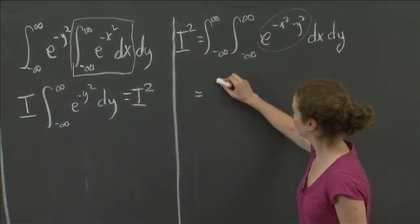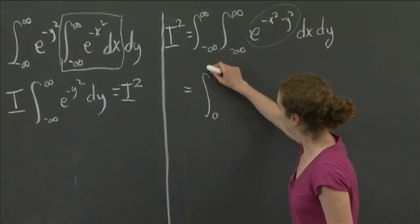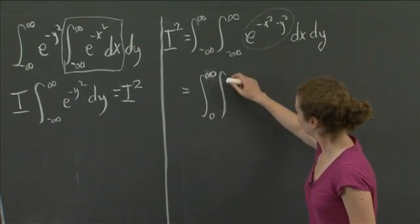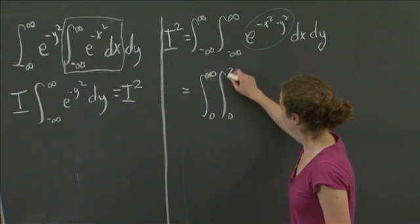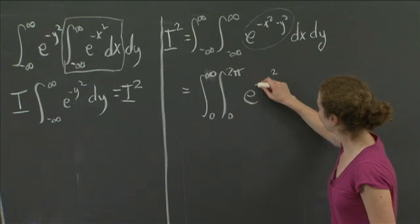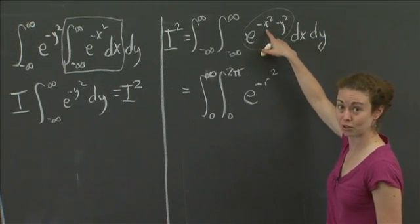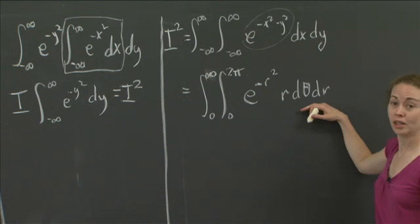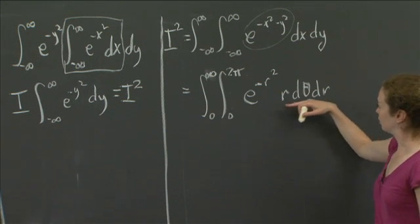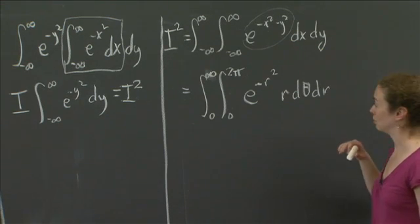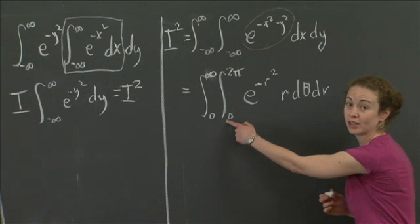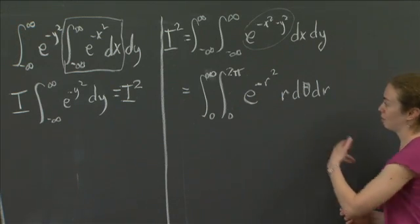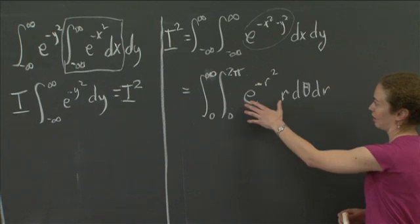When we do the change of variables to polar coordinates, we integrate r from 0 to infinity on the outside and theta from 0 to 2 pi on the inside. The integrand becomes e to the minus r squared, and from the Jacobian — which converts from xy variables to r-theta variables — we pick up a factor of r, giving us r d-theta dr. Because nothing in the integrand depends on theta, integrating in theta first simply gives a factor of 2 pi.